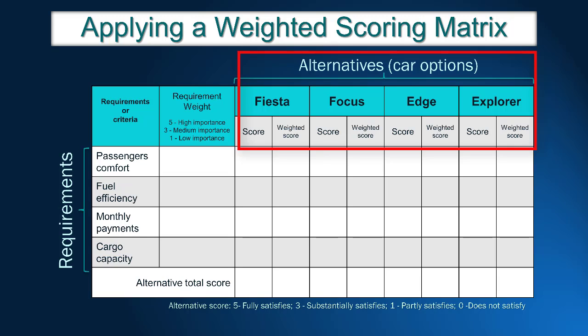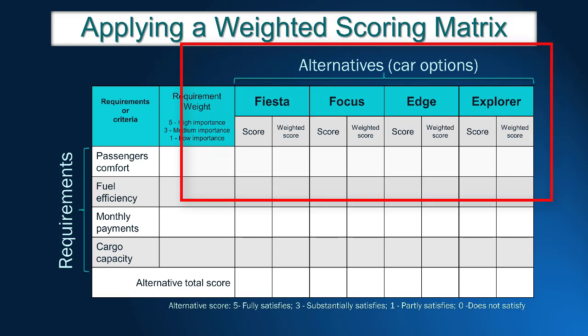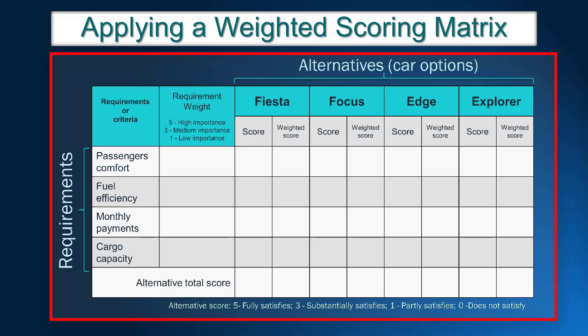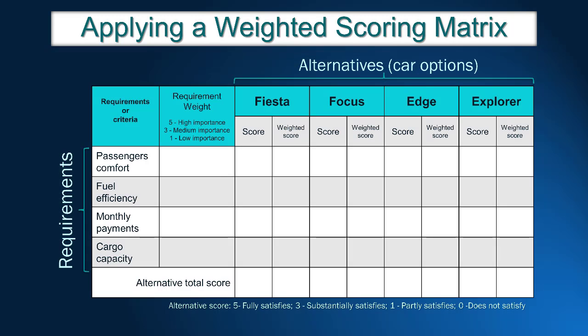To be more illustrative, we decided to present alternatives manufactured by Ford. The four models are Fiesta, Focus, Edge, and Explorer. Fiesta is the smallest, cheapest, and most fuel-efficient car. On the other side, we included the Ford Explorer, a large utility vehicle. In the middle range, we have Ford Focus and Edge. Now the weighting and scoring table is ready for analysis, with requirements in the lines and alternatives in the columns.